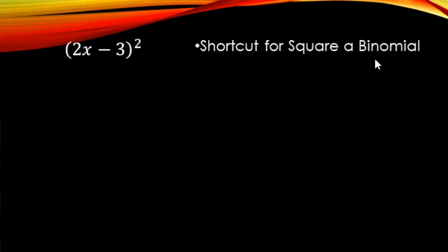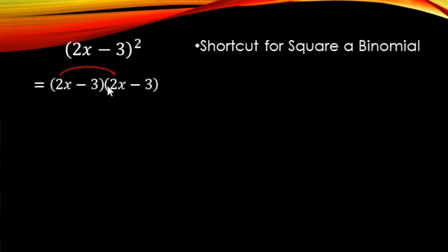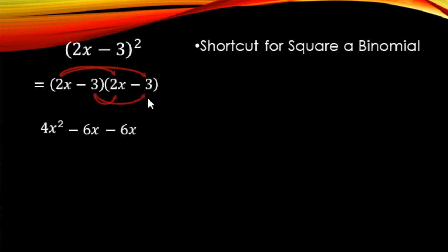Next up, we're going to look for the shortcut for squaring a binomial. So here's an example. Remember, this means we have two copies of 2x minus 3 being multiplied together. We just do FOIL: 2x times 2x makes 4x squared, 2x times negative 3 makes minus 6x, negative 3 times 2x gives another minus 6x, and then negative 3 times negative 3 makes positive 9. Adding like terms: 4x squared, and then negative 6x plus negative 6x makes negative 12x.